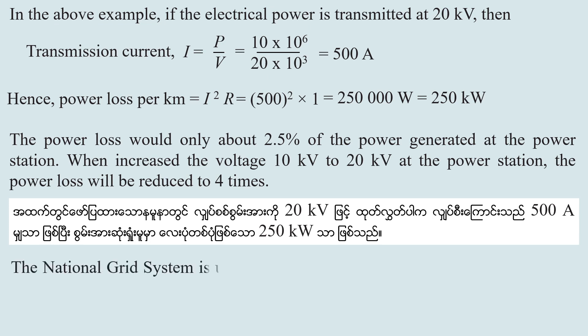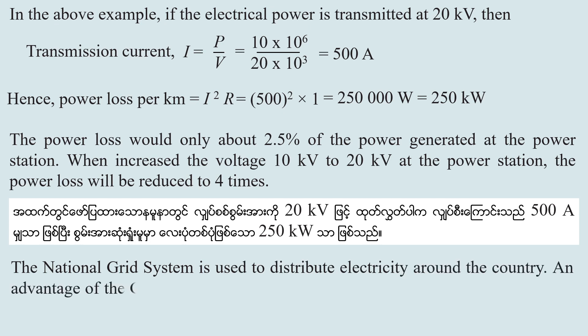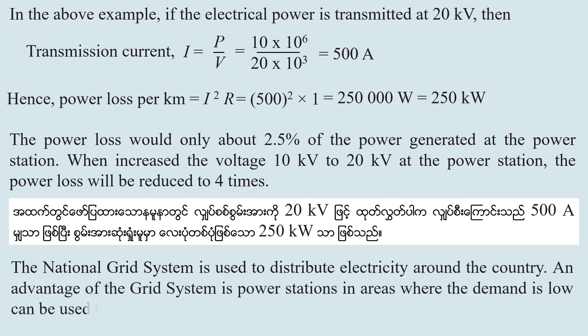The national grid system is used to distribute electricity around the country. An advantage of the grid system is that power stations in areas where demand is low can be used to supply areas where demand is high.